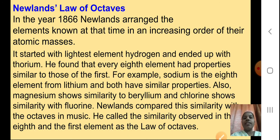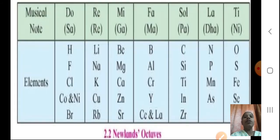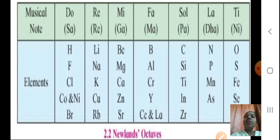Newland compared this similarity with the octaves in music — like Saregama Padhanisa, where you come back to Sa. He called the similarity observed in the eighth and the first element as the law of octaves. Just like in musical notes, elements also show that the first and the eighth element have similar properties. So he told that we can arrange the elements in the order of the law of octaves.